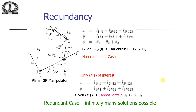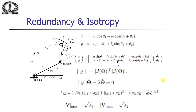If we are not interested in the orientation of the last link and only in its position, we have two equations in three unknowns. Given x and y, we cannot uniquely obtain theta 1, theta 2, theta 3, as there are infinitely many solutions.